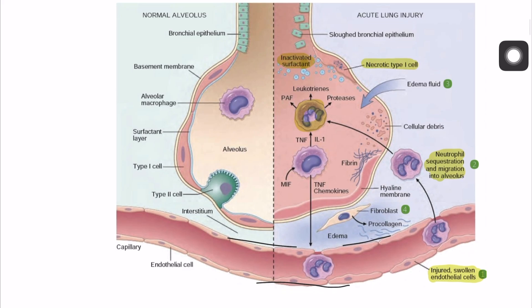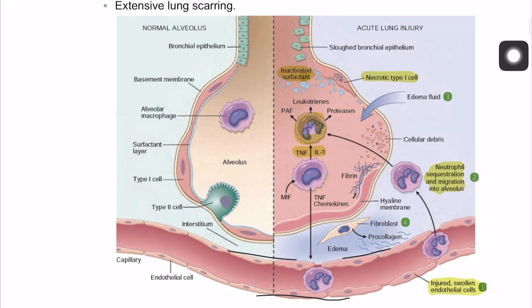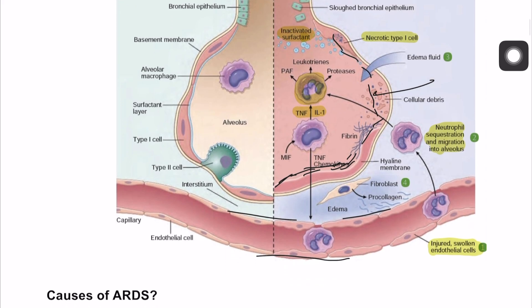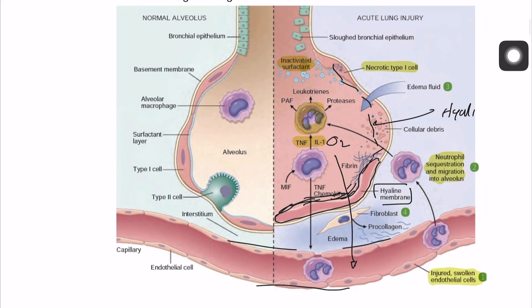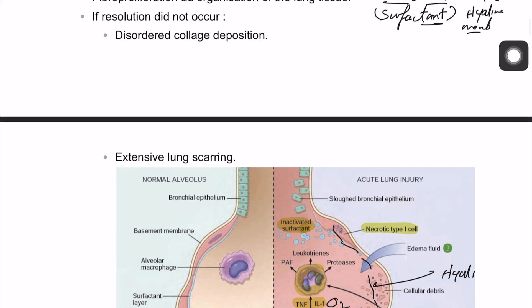Chemotactic mediators such as tumor necrosis factor and interleukin-1 are released as well. There is formation of fibrin inside the alveolar wall. This fibrin continues to form along the wall of the alveoli, forming what is called a hyaline membrane. You can see the hyaline membrane here. This hyaline membrane formation prevents the diffusion of oxygen from inside the alveoli into the surrounding capillaries, leading to severe hypoxemia.